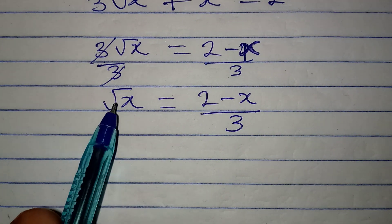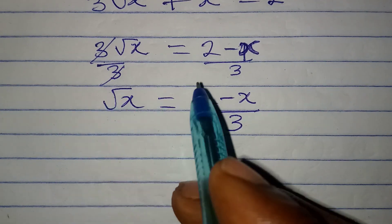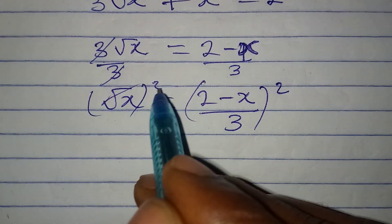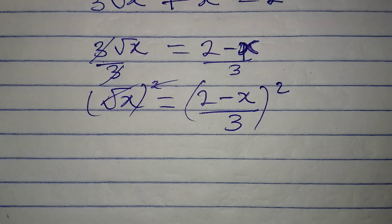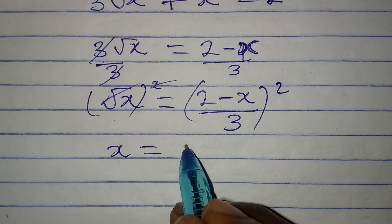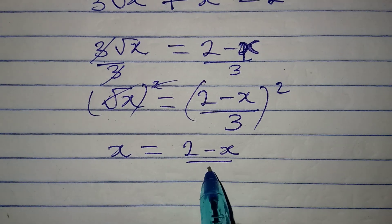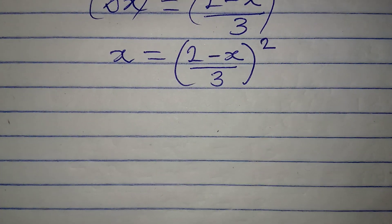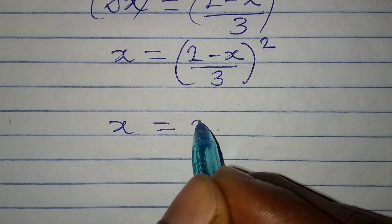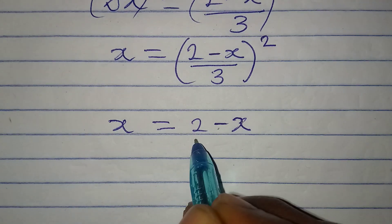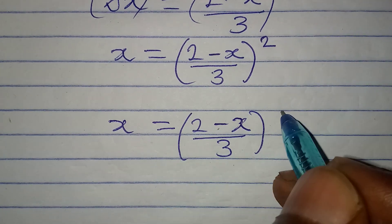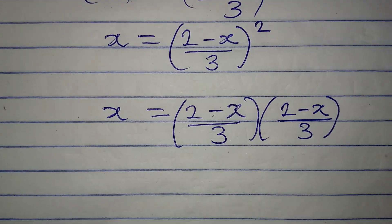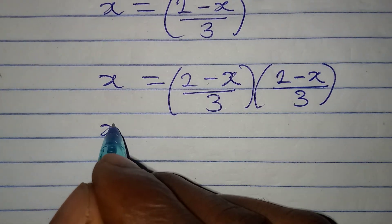Now to eliminate the square root, we square both sides. The square root and the square cancel each other, so x equals (2 - x)/3 all squared. This means x equals (2 - x)/3 multiplied by (2 - x)/3.